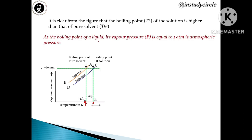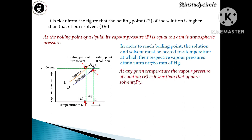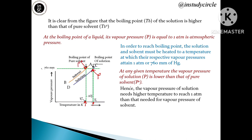At the boiling point of a liquid, its vapor pressure P becomes equal to atmospheric pressure. In order to reach the boiling point, the solution and the solvent must be heated to a temperature at which their respective vapor pressures become 760 mmHg. At any given temperature, the vapor pressure of the solution P is lower than that of the solvent P0, so the solution requires a higher temperature to reach 1 atmospheric pressure.